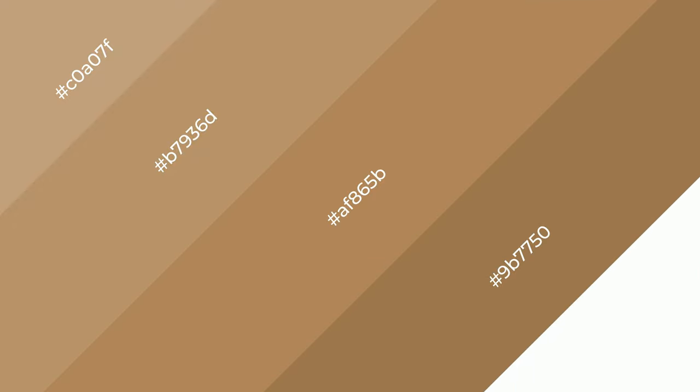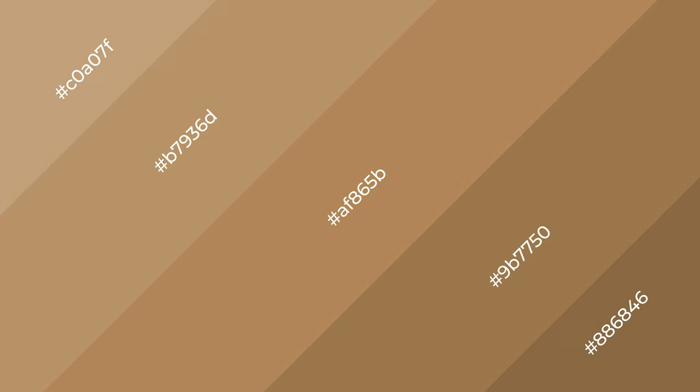To generate shades of a color, we add black to the color. Shades are used in patterns and 3D effects. Layers and shades create depth and drama. Autumn is a warm color and it emits cozier and active emotions.